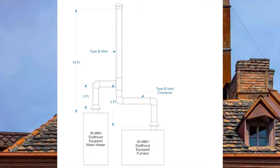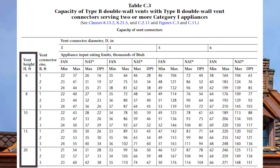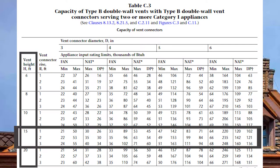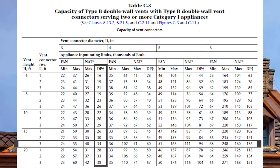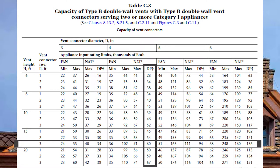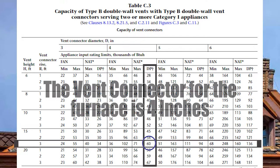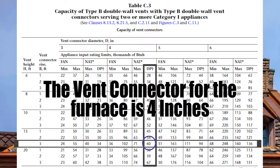Next I'll size the furnace. Coming down to the 15-foot vent height and across at a three-foot vent connector rise, I go to NAT DP. The three-inch area is only good to 34,000 BTUs, but the four-inch area is good to 60,000 BTUs. Four inch will be the size of my vent connector for the draft hood equipped furnace.